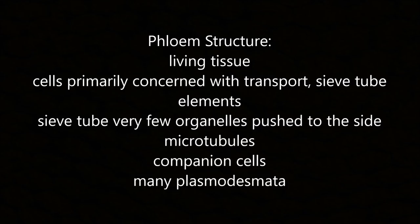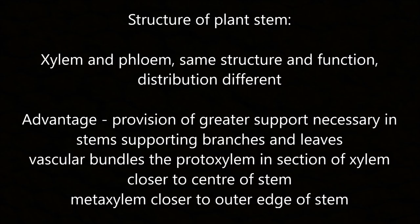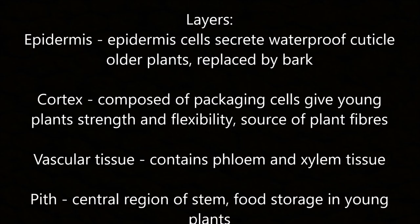The phloem structure consists of living tissue; cells are primarily concerned with transport, and include sieve tube elements. Sieve tubes have very few organelles pushed to the side, and microtubules. Companion cells have many plasmodesmata allowing communication with phloem sieve tube cells. In the plant stem, the proto-xylem is positioned closer to the centre of the stem and the meta-xylem is closer to the outer edge.